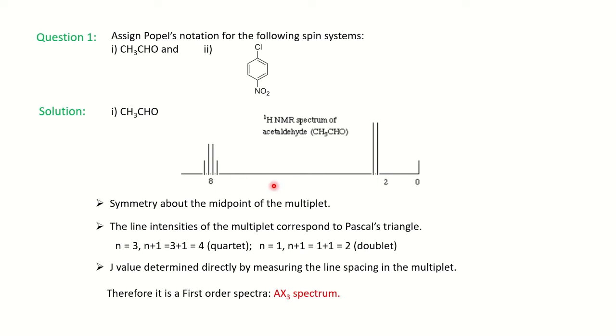And see, we can say that it is a first order spectra and based on this we can say AX3 spectrum - A for one proton and X3 for the three protons. And as it is in alphabet widely spread, here also you can see in the spectra it is nicely spread. So first order spectra.